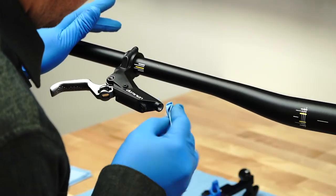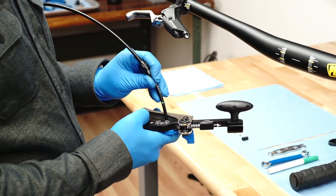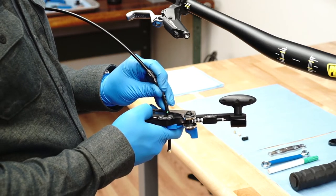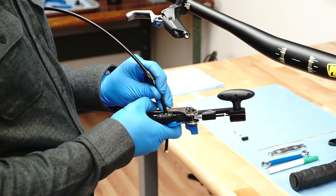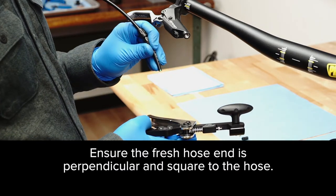Use isopropyl alcohol to clean up any brake fluid. Using a Jaguar Pro Hydraulic Hose Cutter or similar tool, make a clean cut at your mark. Make sure the fresh hose end is perpendicular and square to the hose.